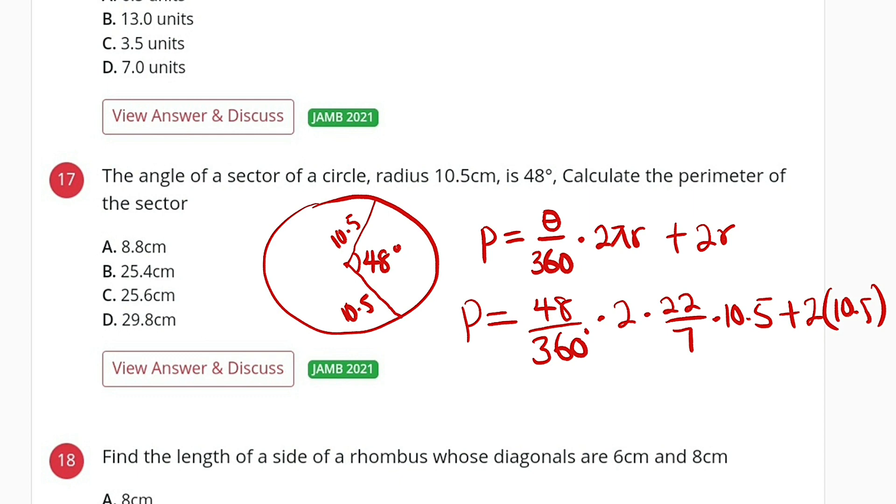Therefore, in total, we have 29.8. P will now be equal to 29.8 centimeters, which is option D. Alright, let's move on to question number 18.